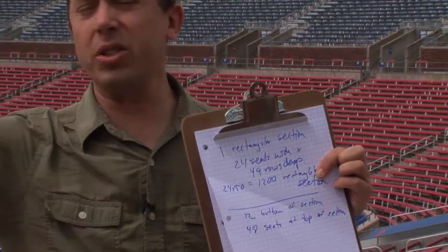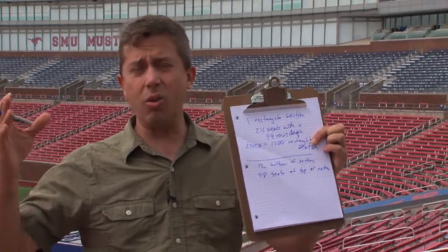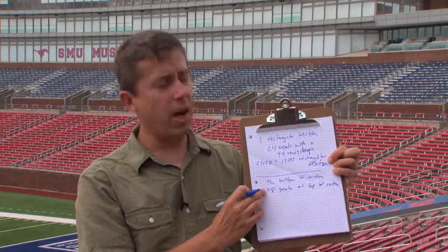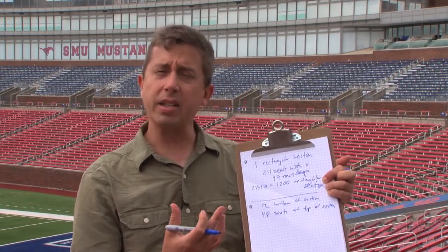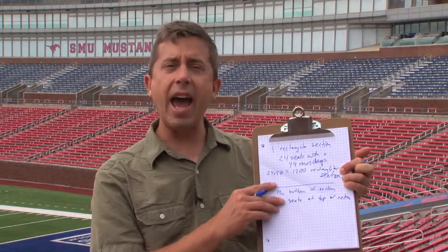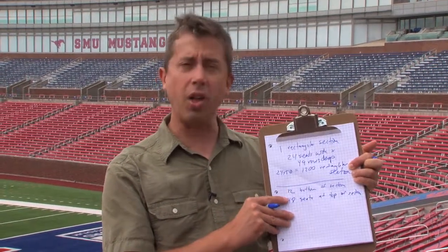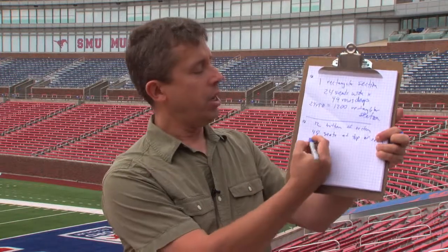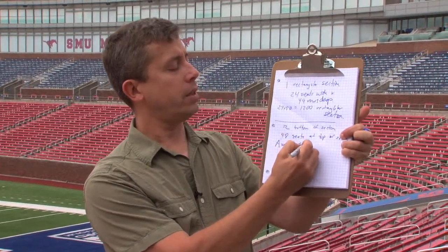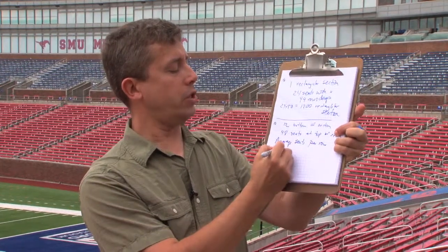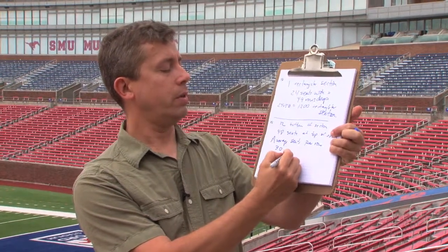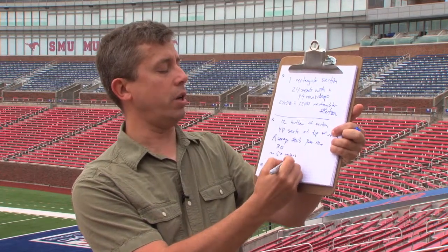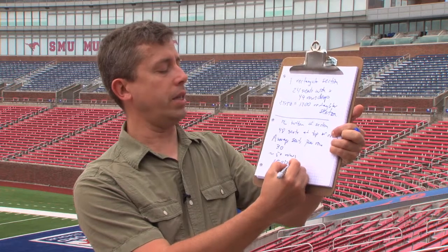Now I want to estimate how many total seats there are in that section. It's growing linearly — the side of every section is a straight line — so the number of seats is growing linearly per row. You can use the average number of seats in a row between the shortest and the longest, multiplied by the number of rows — that's the formula for the area of a trapezoid. The average seats per row between 12 and 48 is 30, and there are about 50 rows. So we're going to estimate 1,500 seats in a corner section.